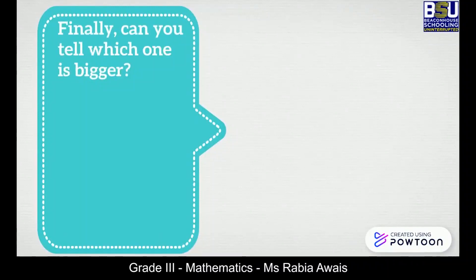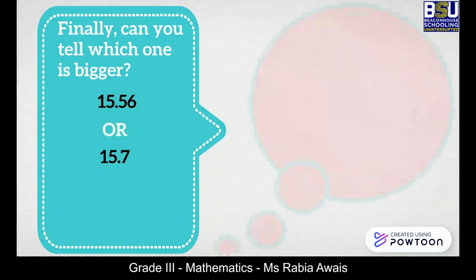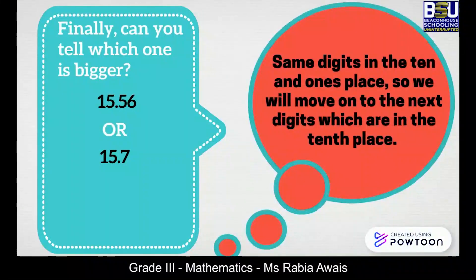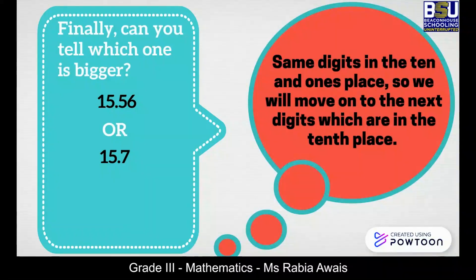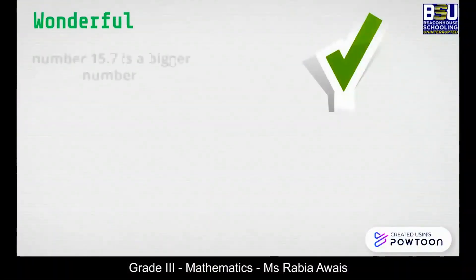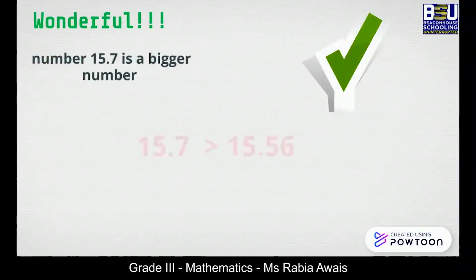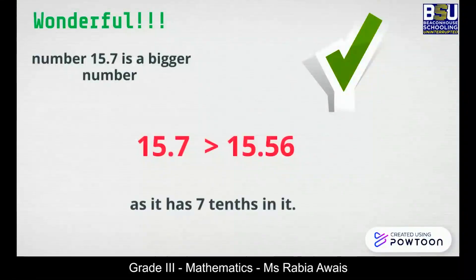Finally, can you tell which one is bigger: 15.56 or 15.7? These two numbers have the same digits in the ones place, so we will move on to the next digits, which are in the tenths place. Wonderful — yes, number 15.7 is the bigger number as it has seven tenths in it.